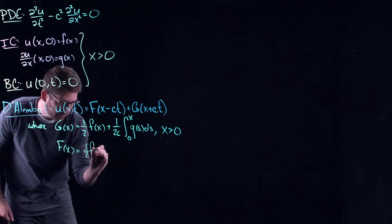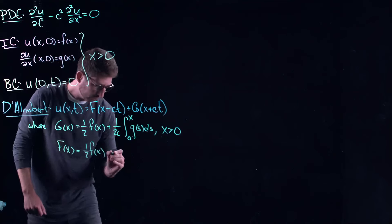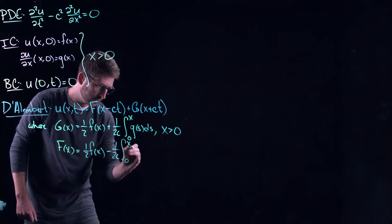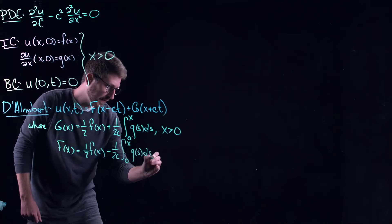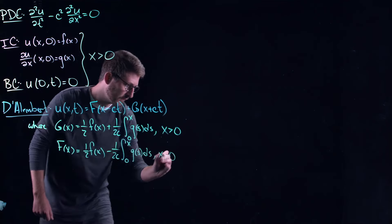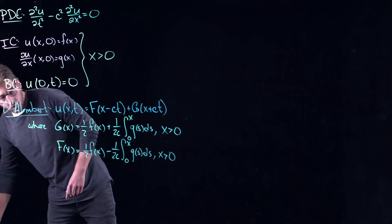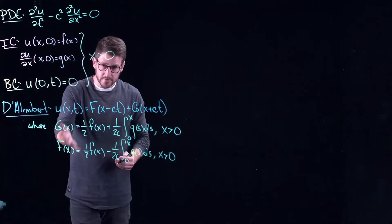So putting this all together gives D'Alembert's solution, right? But this implies that D'Alembert equals one half f of x minus ct minus one over 2c integral from 0 to x of g of s ds. And again, that is only for x positive.